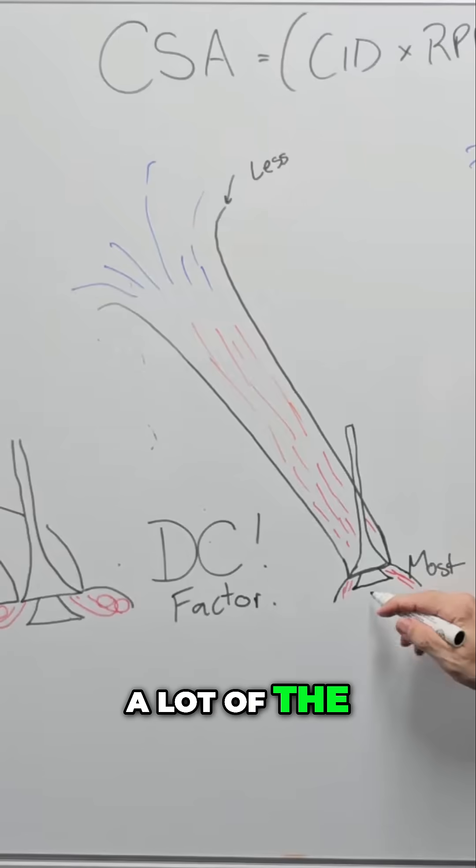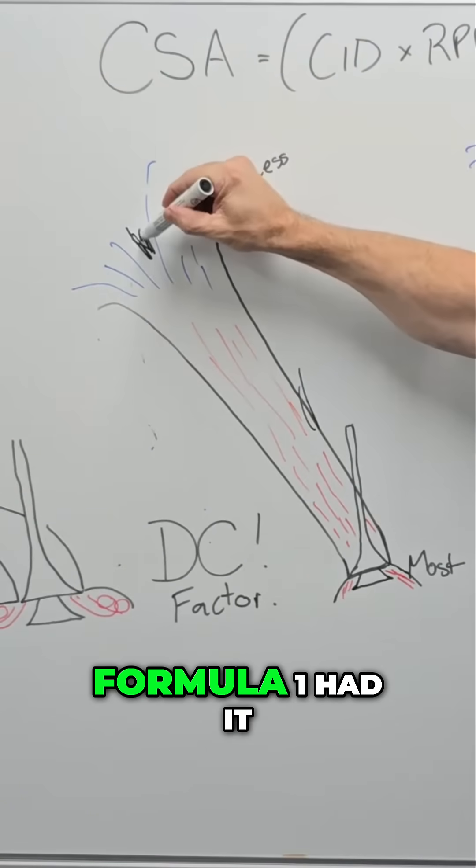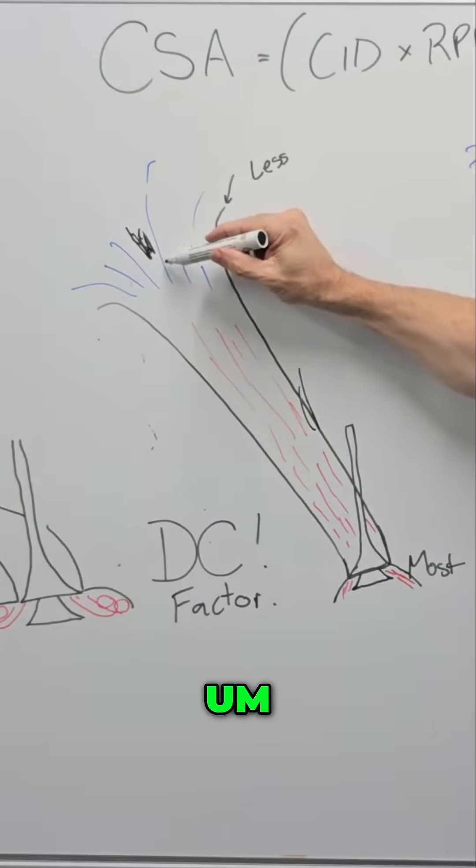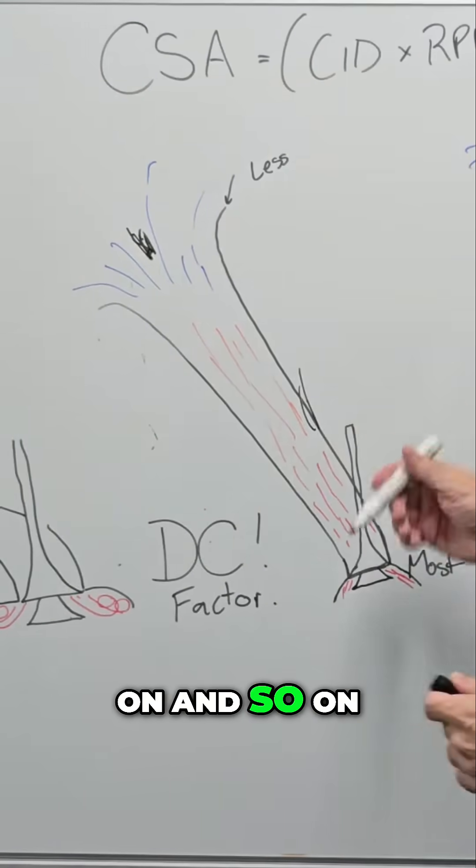And this is why a lot of the twin cams and stuff, where you can have an injector there or Formula One had it up here. Again, the further we go out, the better density recovery we get, and so on.